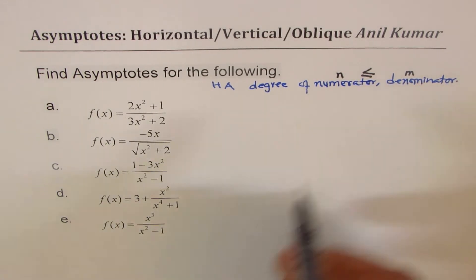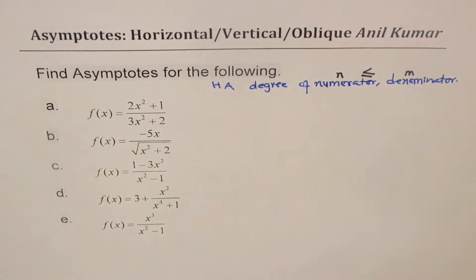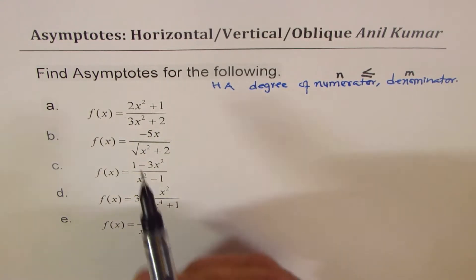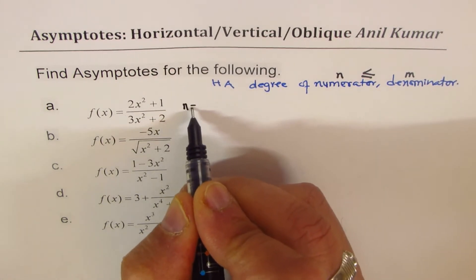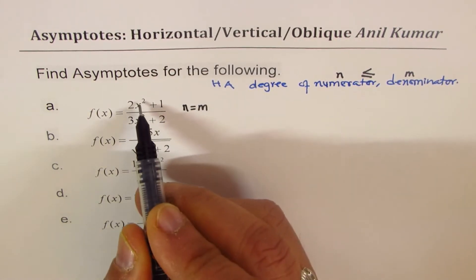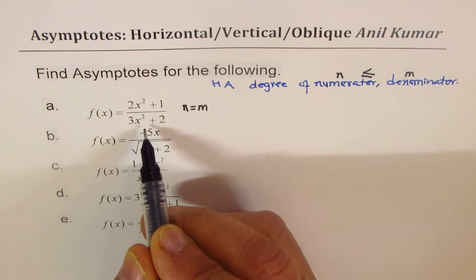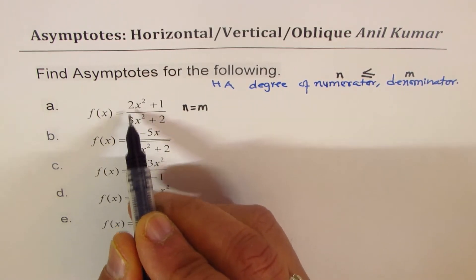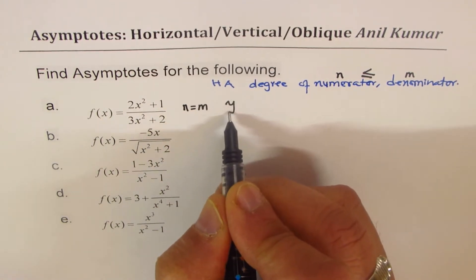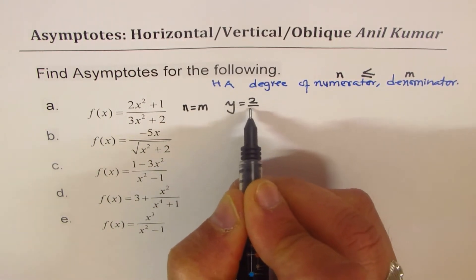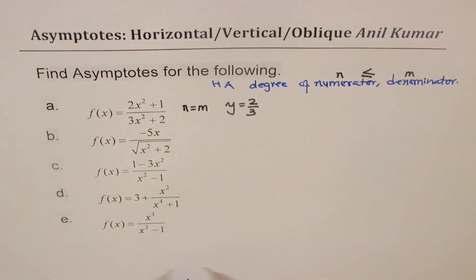Based on this criteria, let us look into the horizontal asymptotes to start with. The first equation has the same degree, so n equals m. Whenever n and m are the same, the equation for the horizontal asymptote is y equals the ratio of leading coefficients, so the equation is y equals 2 over 3.